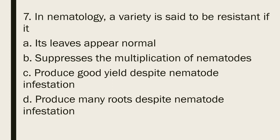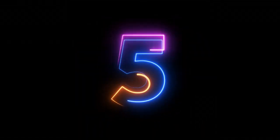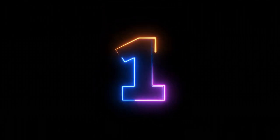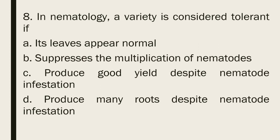Question 7: In nematology, a variety is said to be resistant if it: a. Its leaves appear normal b. Suppresses the multiplication of nematodes c. Produces good yield despite nematode infestation d. It produces many roots despite nematode infestation. The correct answer is letter b, suppresses the multiplication of nematodes.